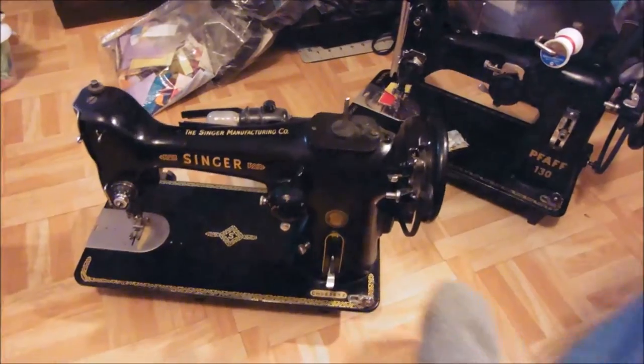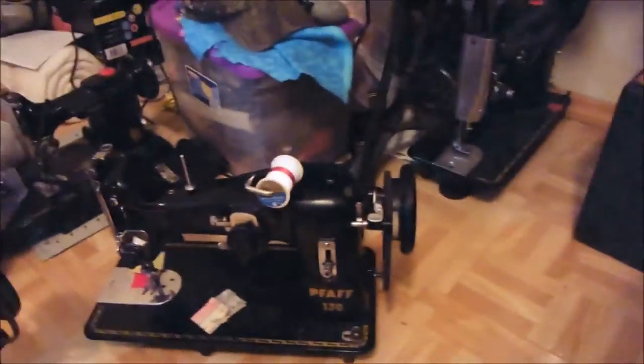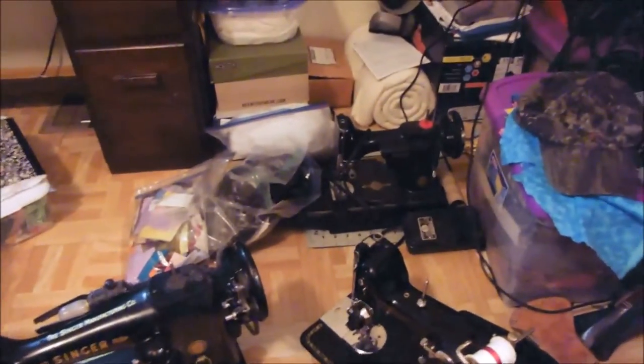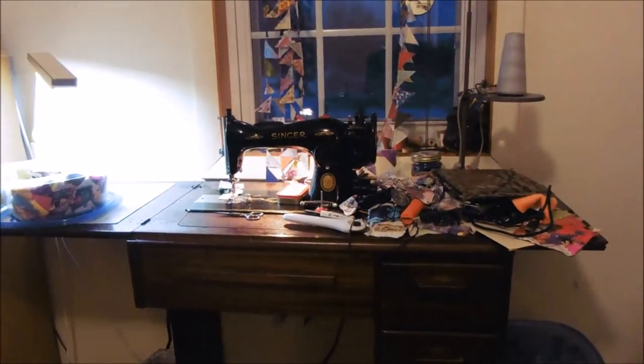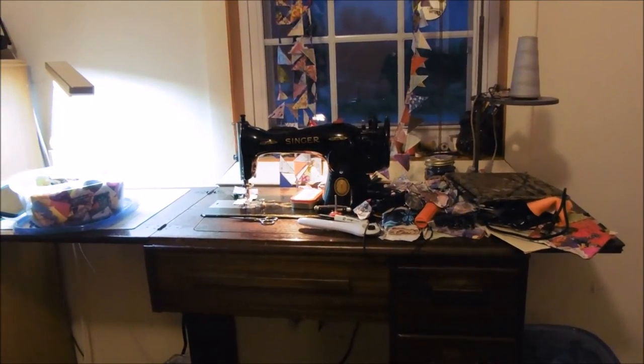That's an oddity there. That's a Singer 206 - it was one of the first zigzags. I haven't done much with it. I cleaned it up. There's a FAF 130, beautiful little featherweight over there in a pile of fabric. A 27 under there. My favorite machine at the moment is the Singer 15-91 that's over there. That's a 201, another featherweight under there. That's a 301. That's a 66 treadle.